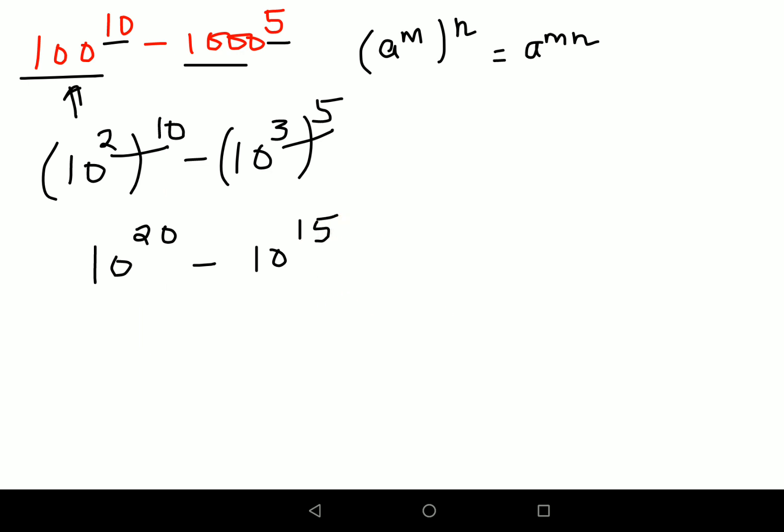Now please understand whenever there is a minus sign, you cannot directly go ahead and minus the indices. The answer would not be 10 raised to 5. If you have found this as your answer, then that is wrong because there can only be one scenario when the bases are same and they are raised to different powers.